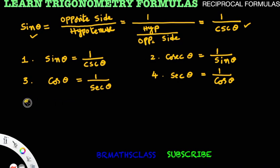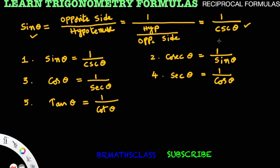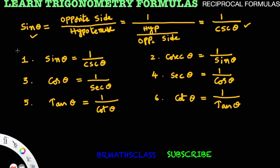Now the fifth formula: tan theta can be written as 1 divided by cot theta. This can be proved very easily using the definitions of trigonometric functions. Similarly, the sixth formula: cot theta is equal to 1 divided by tan theta. So these are the 6 reciprocal formulas.